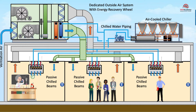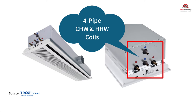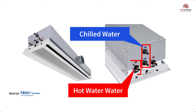Chilled beams have the option of a 2-pipe or 4-pipe configuration, with either a separate heating and cooling coil or a shared coil with the proper control valve arrangement. A 4-pipe system uses 2 separate coils, yielding 4 pipes: 2 chilled water and 2 hot water pipes. The 4-pipe chilled beam will be heavier as there are 2 separate coils.